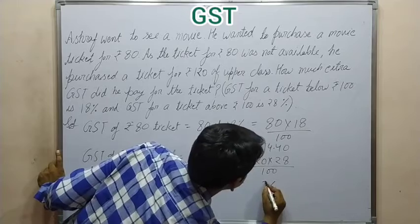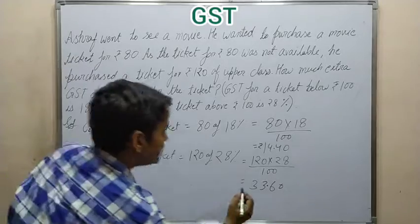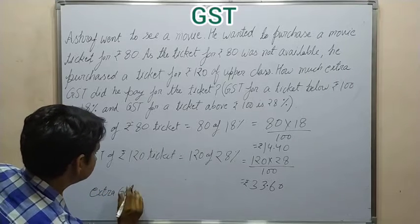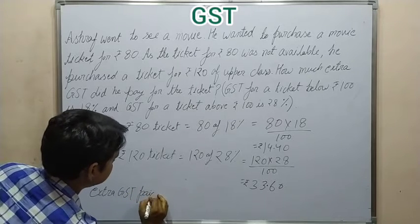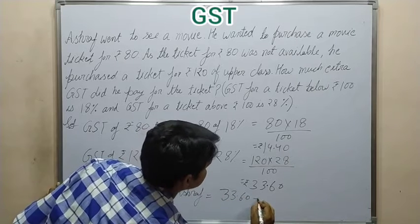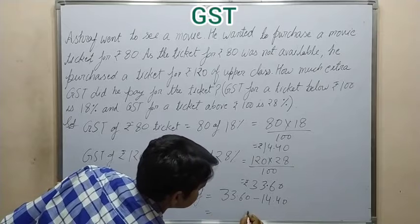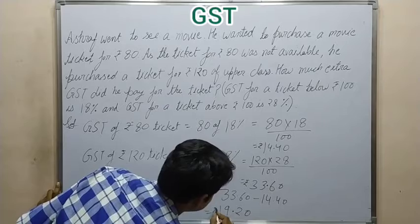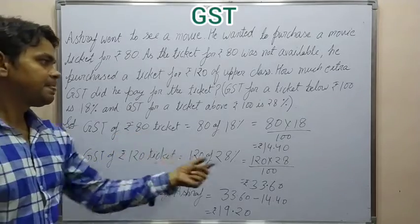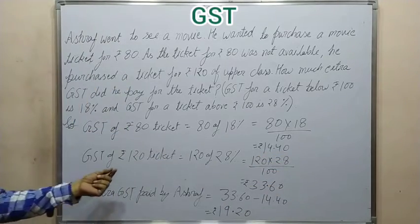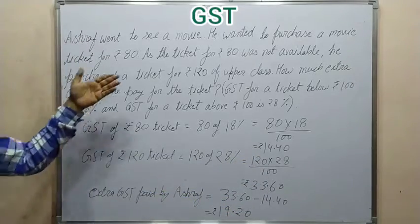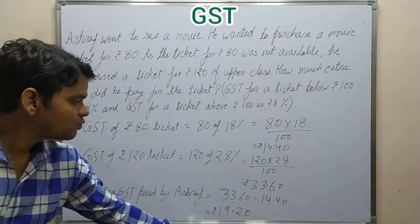Both GST values are now calculated. Extra GST paid by Ashraf is equal to Rs. 33.60 minus Rs. 14.40, and the difference is Rs. 19.20. So Rs. 19.20 is your answer. First we calculated 18% GST on Rs. 80, which is Rs. 14.40, and similarly 28% GST on Rs. 120, which is Rs. 33.60. The difference of the two GST values gives us the extra GST paid, and that is your answer.